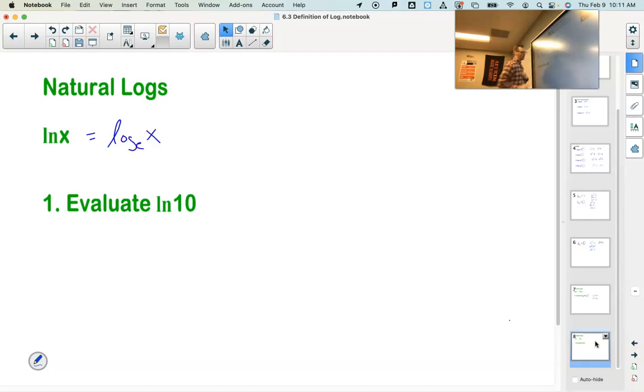Usually I wrote cursive here, but I couldn't do that typing here. This means log base E of X. So when I write natural log of 10, I'm really saying log base E of 10.